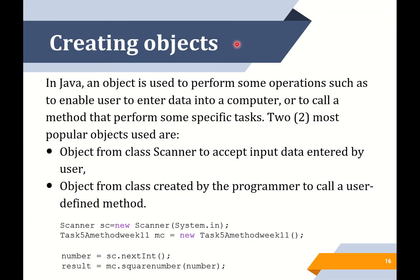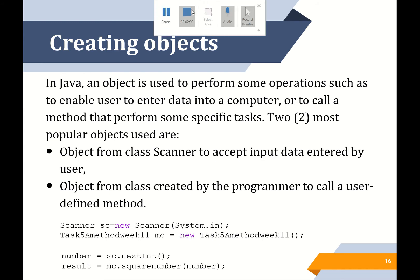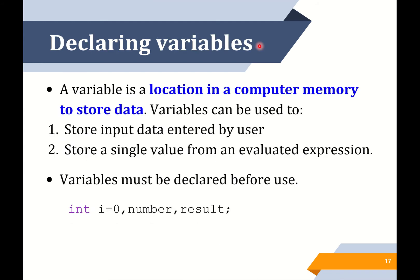The first one is creating object. In Java, an object is used to perform some operation such as to enable the user to enter data into a computer or to call a method that performs some specific task. The two most popular objects used are: first, object from class Scanner to accept input data entered by the user; second, object from a class created by the programmer to call a user-defined method. Next, declaring variables — a variable is a location in computer memory used to store data. It can be used to store input data entered by the user and store a single value from an evaluated expression.